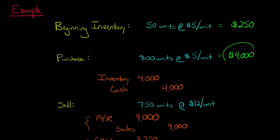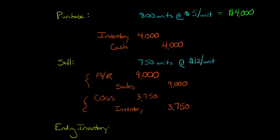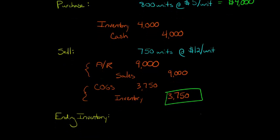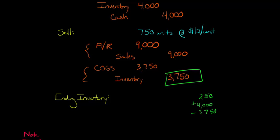We started with $250 worth of inventory, right? We added $4,000 worth when we made that purchase. And then we got rid of $3,750 worth. So what we could do is just say $250, that was the beginning balance, plus $4,000 minus $3,750. And that's going to give us $500.